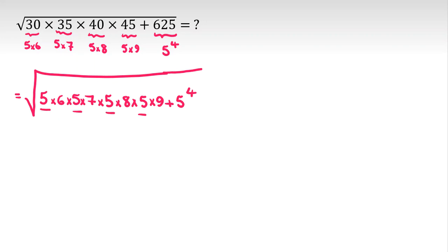Now we have 4 times 5 times 6 times 7 times 8 times 9 plus 1. So I can say it is equal to square root of 5 to the 4 by the rule that we know.